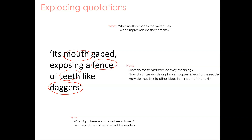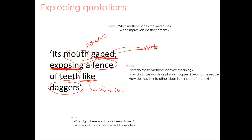There are quite a lot of features here that form the basis of the imagery. Furthermore, if I want to look at methods — the writer makes a comparison, and I can see that in the word 'like' here — so I can look at the use of simile. And in fact, there are at least two verb choices I could zoom in on also: 'gaped' and 'exposing.' So just in terms of methods, there's quite a lot here that I could talk about. What impression do they create? Overall, I just get the impression that this is a huge and terrifying creature — something incredibly powerful.